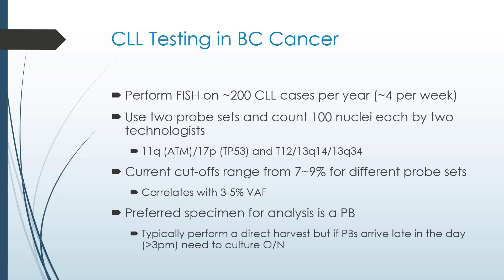Within the province of British Columbia we are one of four labs that provide CLL FISH testing. We perform approximately 200 CLL FISH cases per year, or about four per week. We use a two probe set analysis and each of our technologists counts 100 nuclei each for each probe set. The first probe set is a dual color probe set consisting of 11q and 17p, and we have a tricolor probe set that assesses for trisomy 12 and deletions of 13q. Depending on the probe set, our current cutoffs range from 7 to 9 percent, which correlates to a variant allele frequency of 3 to 5 percent.